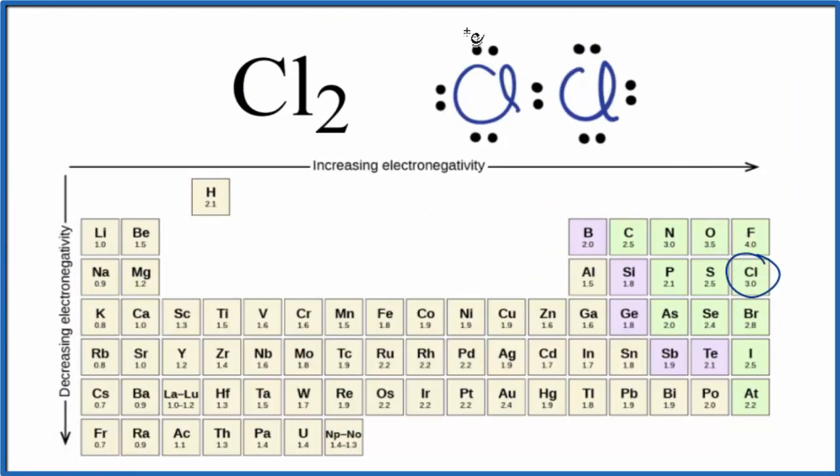So, if we look at the difference, we have chlorine 3.0, but this chlorine here, that's 3.0 as well. So, 3.0 minus 3.0, that gives us a difference of zero. So, there's really no difference in the electronegativity here. These are equal.